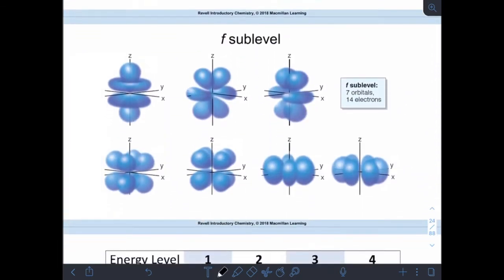If you thought d was weird, take a look at the f sub-level - crazy shapes. But again, the same thing holds true: each one can hold a maximum of two electrons. Even though we have all these weird shapes and it looks like there should be holding more, maximum two electrons each. If I have seven orbitals in the f sub-level, seven times two means the maximum I can have there is 14 electrons.